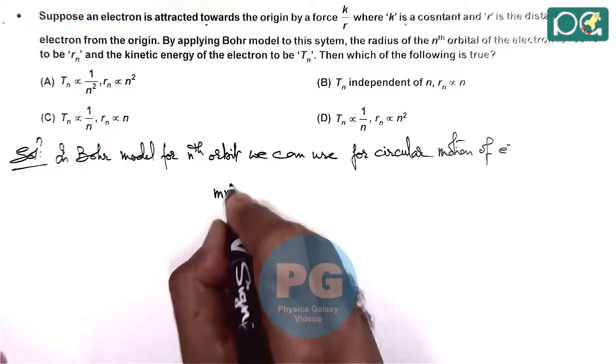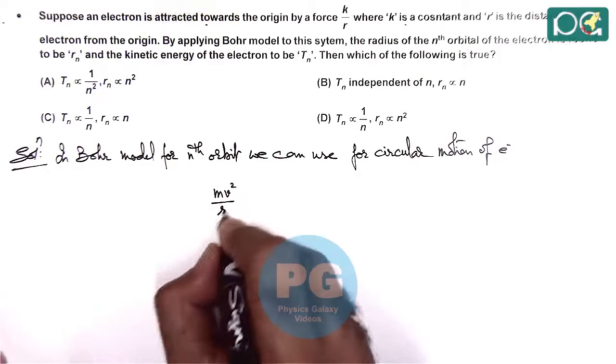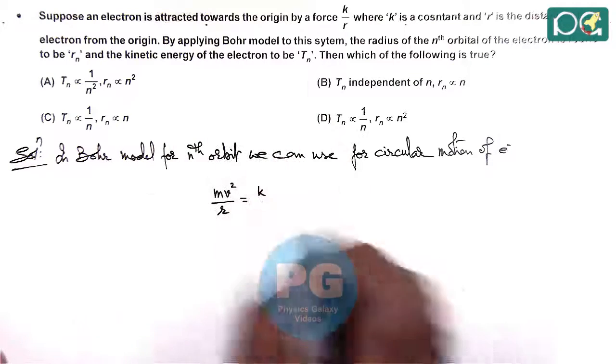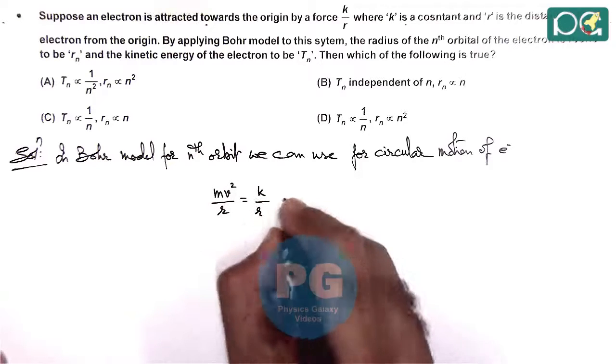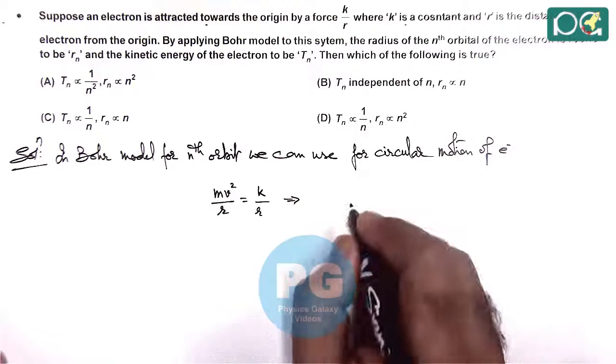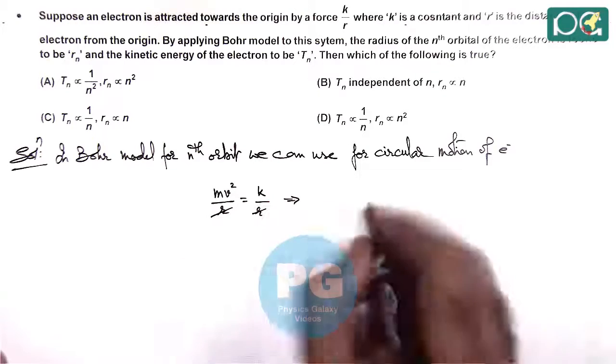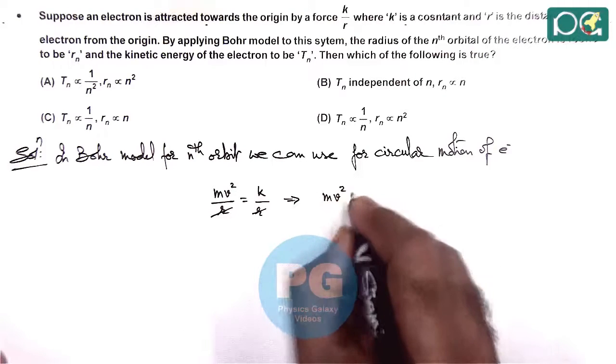The centripetal force mv²/r is given by the attractive force on the electron which is k/r. That gives us the value of speed, or mv² is equal to k.